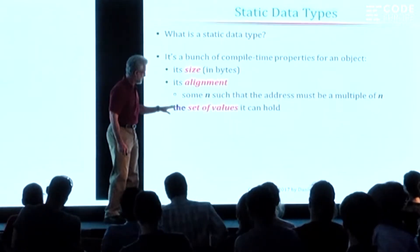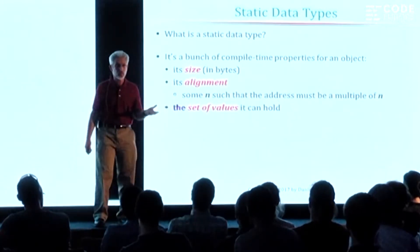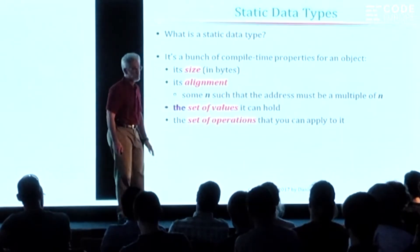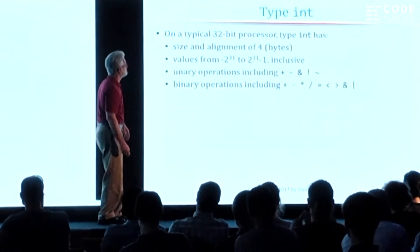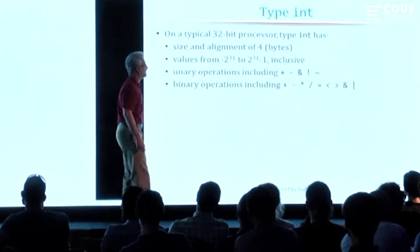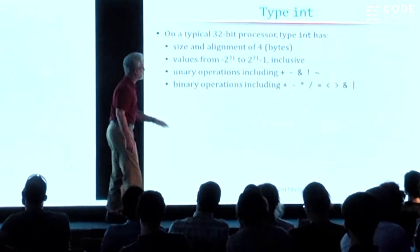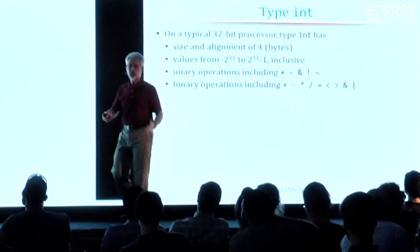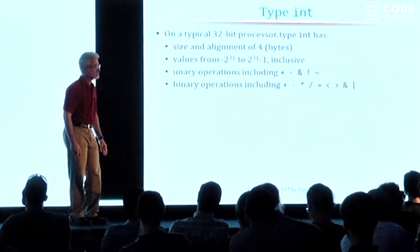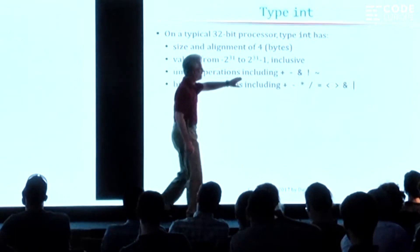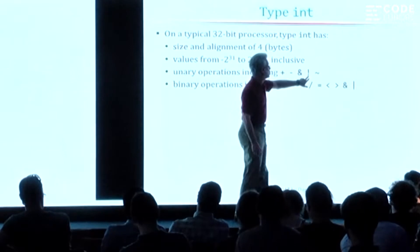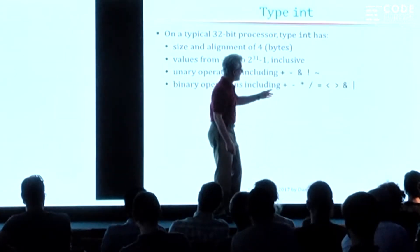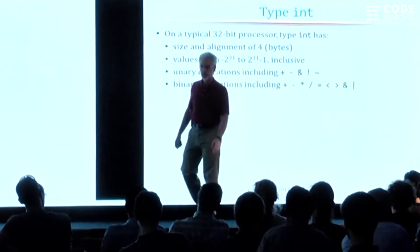Here's what's really interesting: the type also specifies the set of values that can be put into an object of that type, and it also specifies the set of operations that you can apply. For example, type int on a typical 32-bit processor has size and alignment of 4 bytes, and the range of values is from there to there — on the order of 2 trillion. There'll be a set of unary operations like plus, minus, address-of, logical not, and the complement/negate operator, plus binary operations like plus, minus, times, divide, equals, less than, greater than, and that sort of stuff.